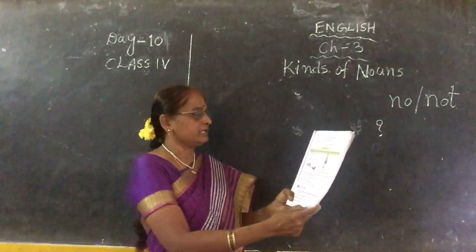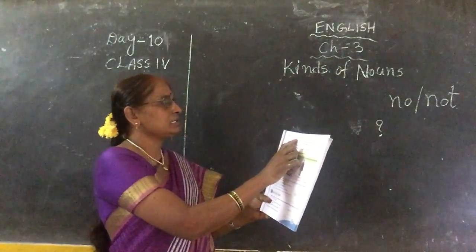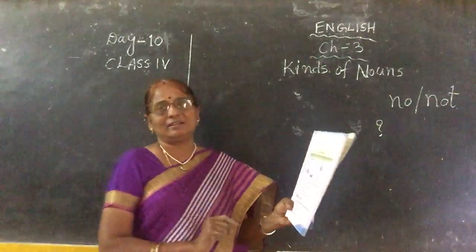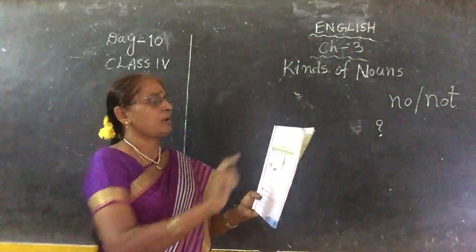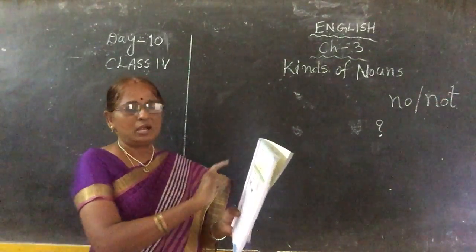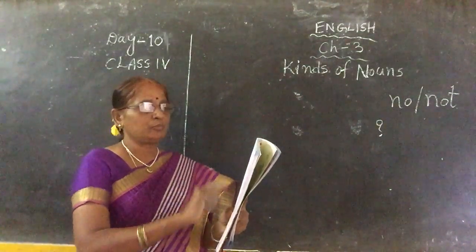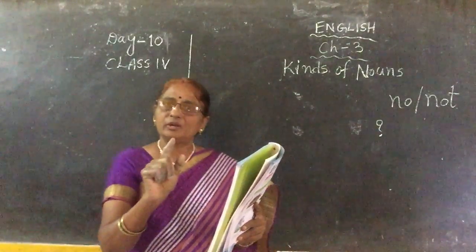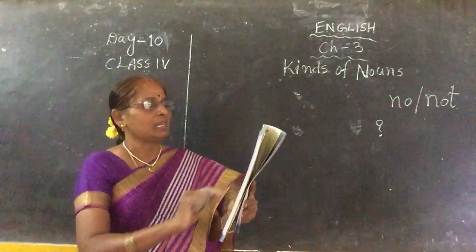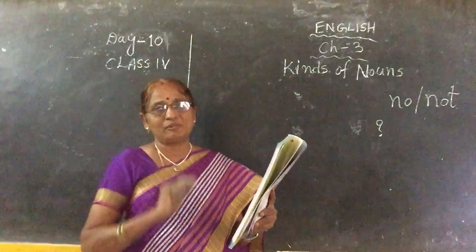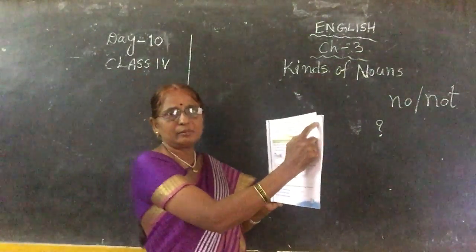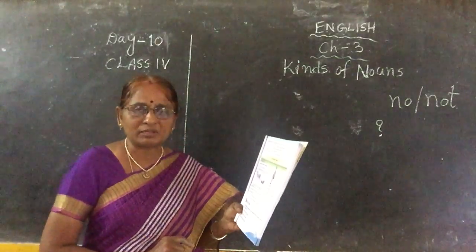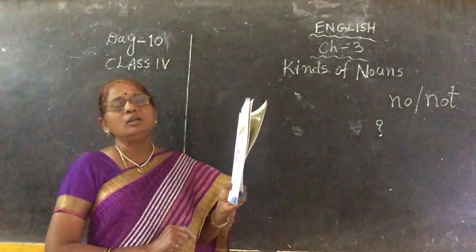Coming to page number 19. In the given sentences, the highlighted words are proper nouns. Miss Shilpi and Jawaharlal Nehru are names of persons. Udaipur and India are names of places. Ali is the name of an elephant. And Alice in Wonderland is the name of a book — a thing. So all — name of person, place, animal, things — when we give names for these nouns, they are called proper nouns.